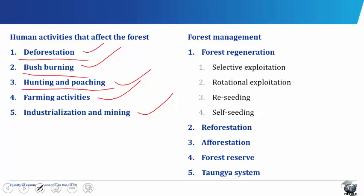Hunting and poaching: poaching is illegal hunting of animals in the forest. Hunting of any type disturbs the ecological habitats and causes ecological imbalance in the forest. Farming activities: when forest land is to be used for crop production or grazing animals, the trees are cleared, thereby eliminating the forest. In industrialization and mining, when the land is cleared for mining and industrial activities, the forest trees are destroyed.